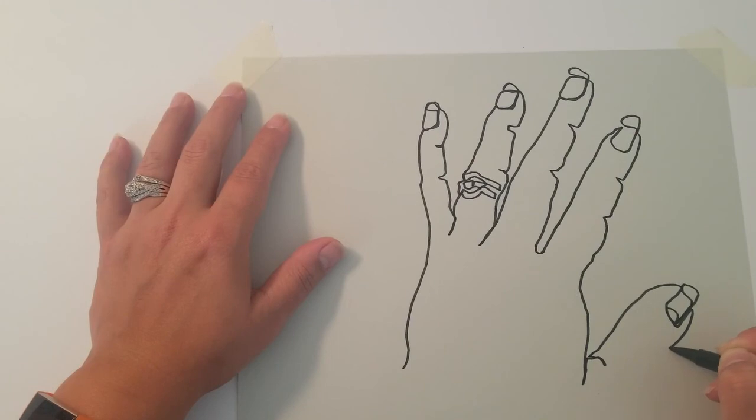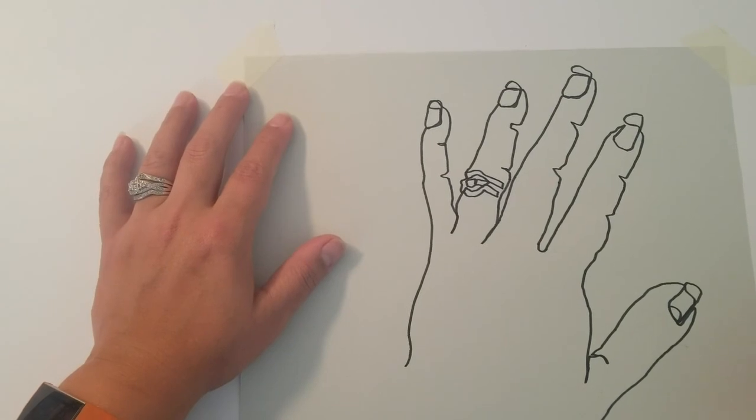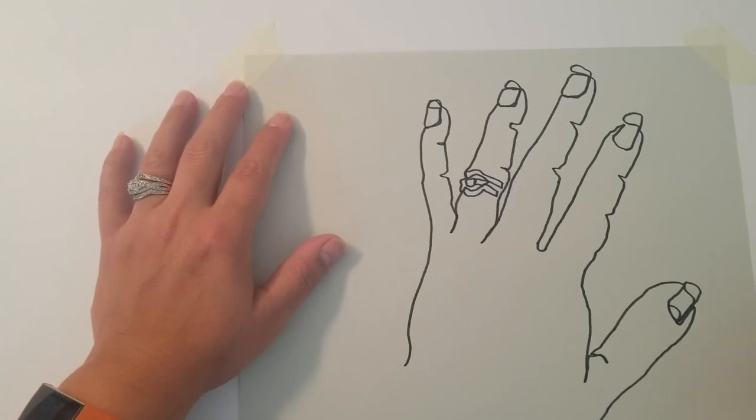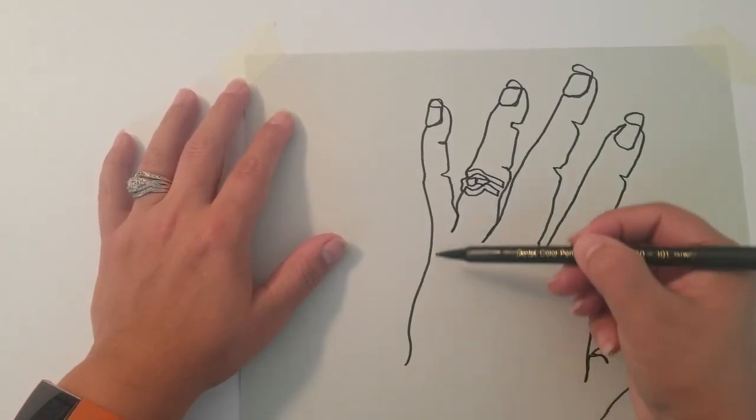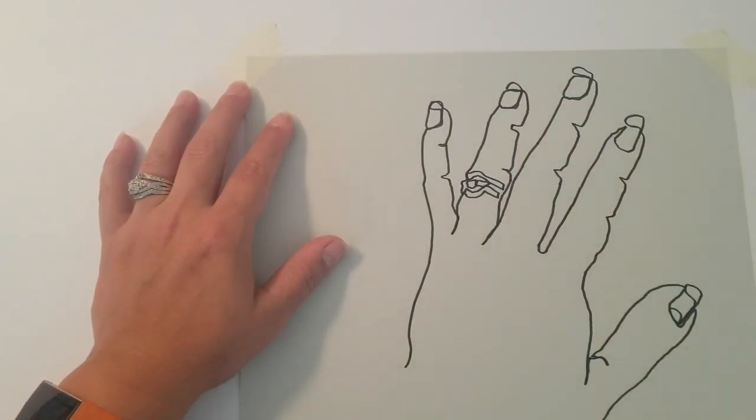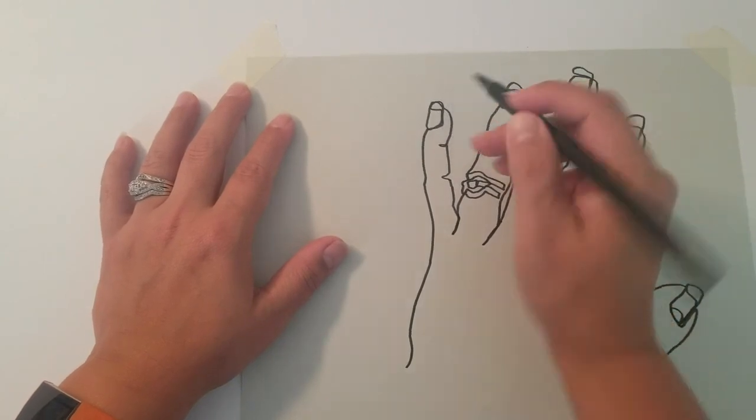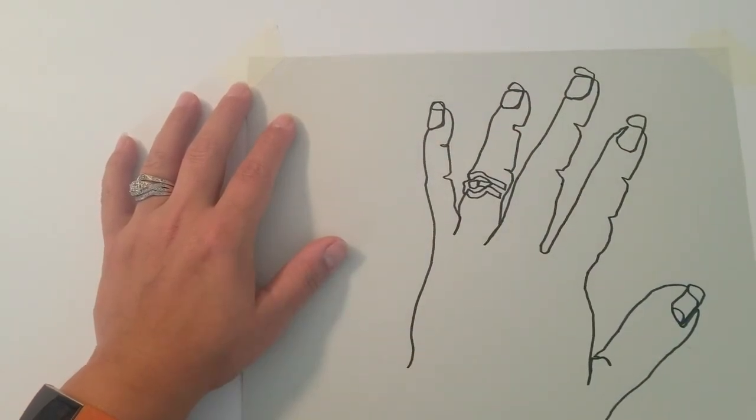So as you can see it doesn't look exactly like my hand, but notice I'm focusing on that curve, the type of line that I'm supposed to be using, how is it forming this shape here.